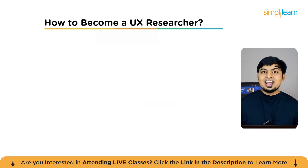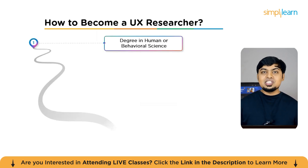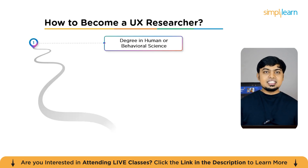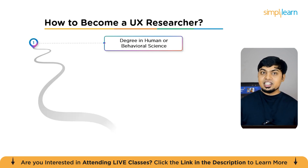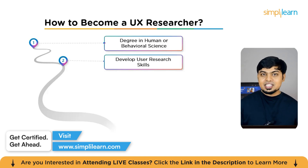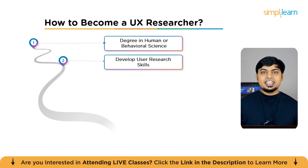How to become a UX researcher: First, get a degree in human or behavioral science — such as psychology, biology, physiology, or artificial intelligence — since UX research is closely related to understanding user behavior. Second, develop user research skills by learning from conducting surveys, getting hands-on training with Google Analytics, engaging in UX research programs, and practicing data analysis tools like MATLAB and Simulink.